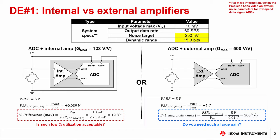Ultimately, the goal is to be able to answer the questions at the bottom of this slide. Is it acceptable to use such a small percentage of your ADC's FSR given the low noise, high dynamic range specs, or is it necessary to use an external amplifier with a high gain to achieve the required performance? Now that we've discussed the intent of this design example, let's move on to selecting components.